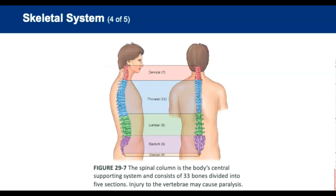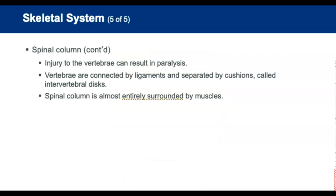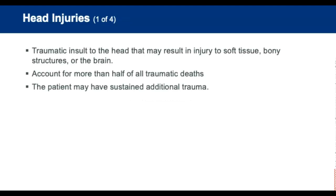The front part of each vertebra consists of a round, solid block of bone called the vertebral body. The back forms the bony arch. The series of arches form a tunnel called the spinal canal, which encompasses and protects the spinal cord. The vertebrae are connected by ligaments and separated by cushions called intervertebral discs.